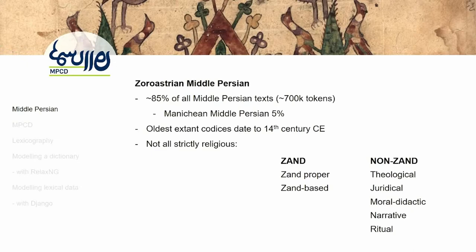It is a very dead language. Even though it died out sometime around the 8th century CE, the oldest manuscripts we have are from the 14th century CE. Not all the texts are religious, even though it's mostly attested in the religious sphere. We have basically two types of texts: one is called Zand, which is commentary and translation of the Avestan texts; and then we have non-Zand texts, which are theological and moral narratives — for example, a work that has been described as a sort of Dante's Inferno of Middle Persian culture.